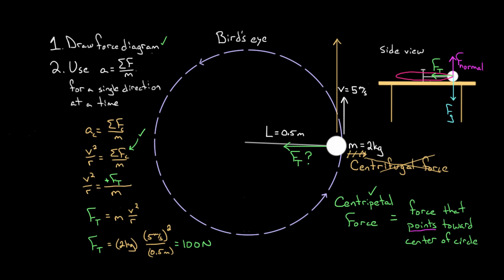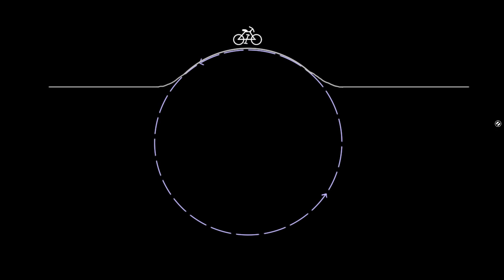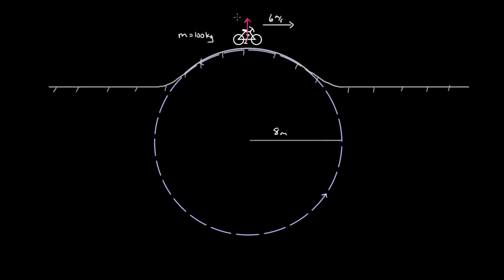Let's use this same procedure but look at a new problem. Let's say you were riding your bike over a circular hill. The gray line represents the pavement — it starts flat, then veers upward into a concrete hill you ride over. The purple circle represents the shape you'd get if you continued the crest of the hill into a full circle, giving us a way to define the radius. The radius of this hill is 8 meters, the mass of you and your bike is 100 kilograms, and you're riding at 6 meters per second. What's the normal force on you as you ride over the crest?